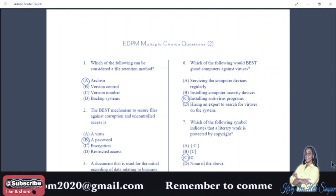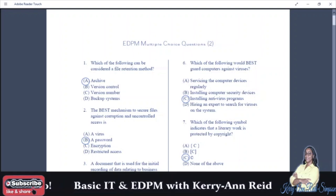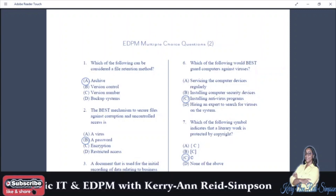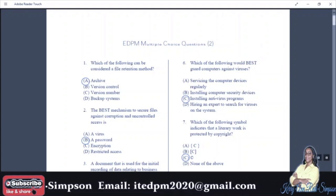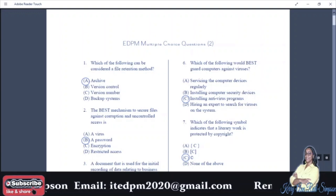Number two: the best mechanism to secure files against corruption and uncontrolled access is: A: a virus, B: a password, C: encryption, D: restricted access. And your answer is B, password.